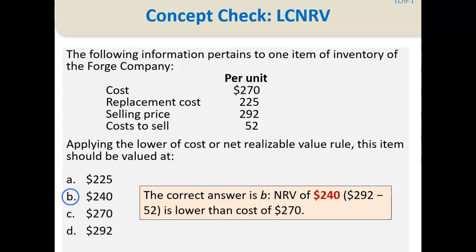The cost is $270. If we compare that to the net realizable value of $240, you can easily see that the inventory should be valued at the $240 net realizable value. And of course, the net realizable value is its selling price of $292 less the $52 cost to sell. Well, that's all for this video. In the next video, we'll discuss the lower of cost or market approach.